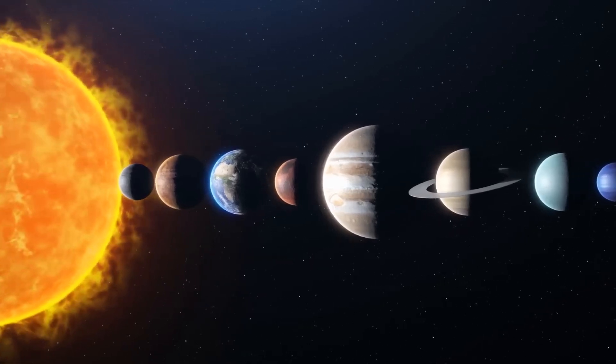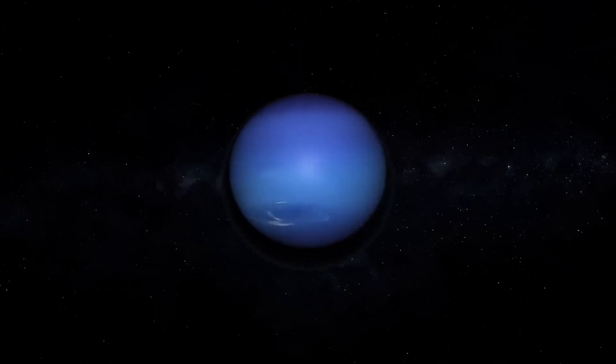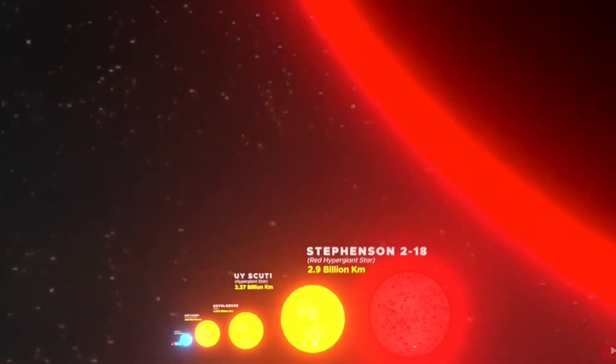Saturn, known for its magnificent rings, orbits at an average distance of approximately 1.4 billion kilometers.